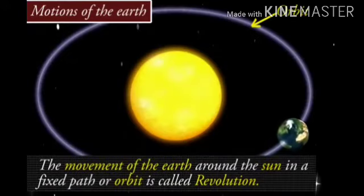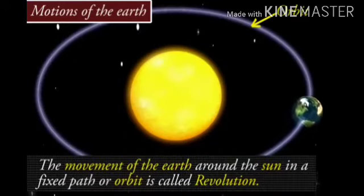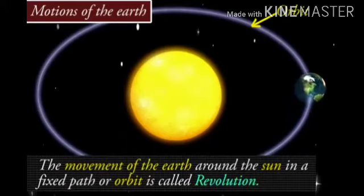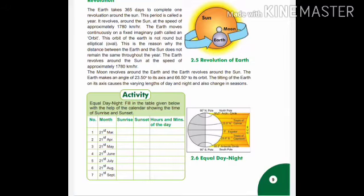Now, let us see what is revolution. The movement of the earth around the sun in a fixed path or orbit is called revolution. The earth takes 365 days to complete one revolution around the sun. This period is called a year.